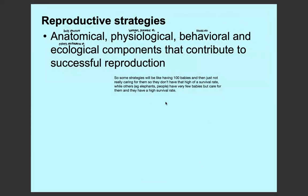If we look at some reproductive strategies, these are anatomical, physiological, behavioural, and ecological components that contribute to successful reproduction. Anatomical would be the body structure, physiological would be like hormones and pheromones, behavioural would be like courting and rituals, and ecological components would be how the environment affects the reproductive strategies.